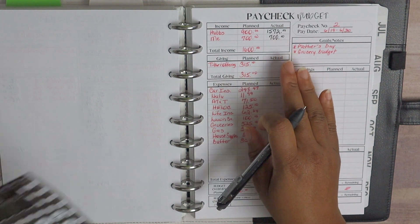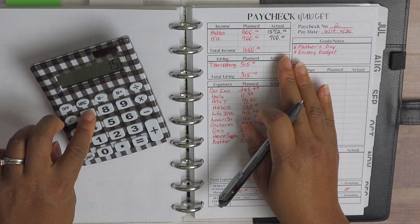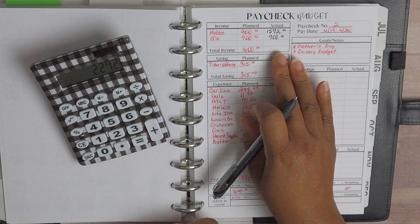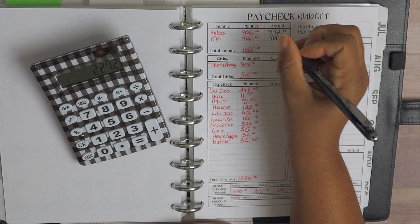So we're going to go ahead and total this amount. So $1,572 and $700, so we came in at $2,272 for paycheck two, which is awesome guys.